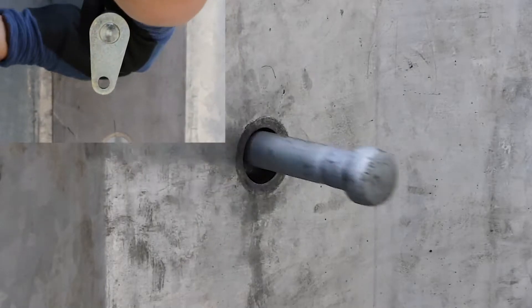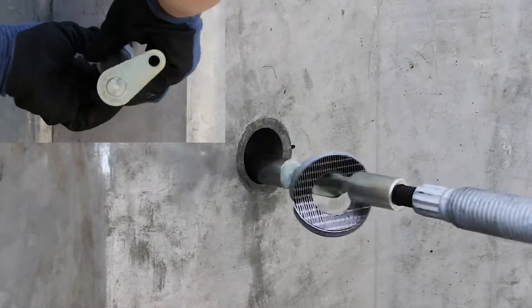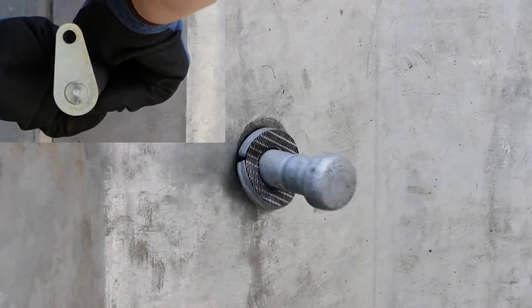Once the bolt is through the hole, the folded washer opens up to provide a holding point for the blind end head of the bolt.